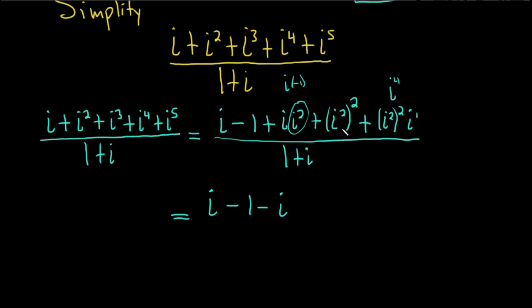i squared squared. So i squared squared is negative 1 squared, which is 1, right? This is negative 1 squared, because i squared is negative 1. And then this one's going to be 1 as well, right? Because it's i squared squared. So we're just left with the i.